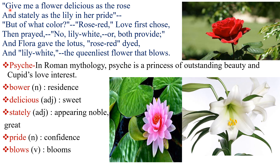Now let's read the sestet, the last six lines of the poem. Cupid, the god of love, asked Flora: 'Give me a flower delicious as the rose and stately as the lily in her pride.' So Flora took on the task to create a flower as delicious as a rose and as great as a lily.